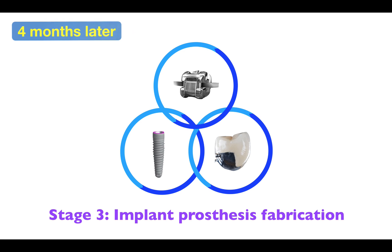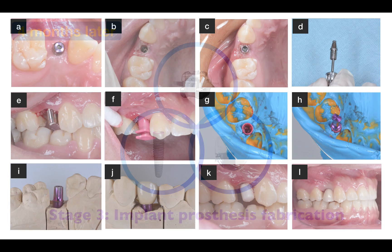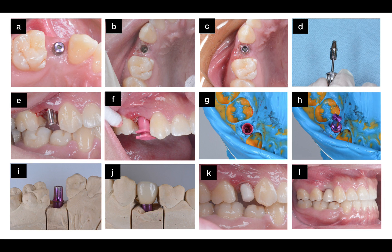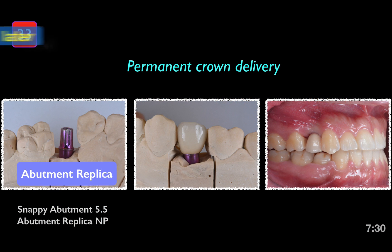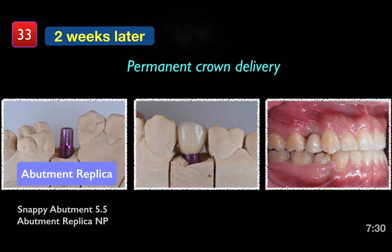Four months later, we moved to Stage 3: implant prosthesis fabrication. This slide includes every detail of the impression, and two weeks later a permanent crown was delivered.